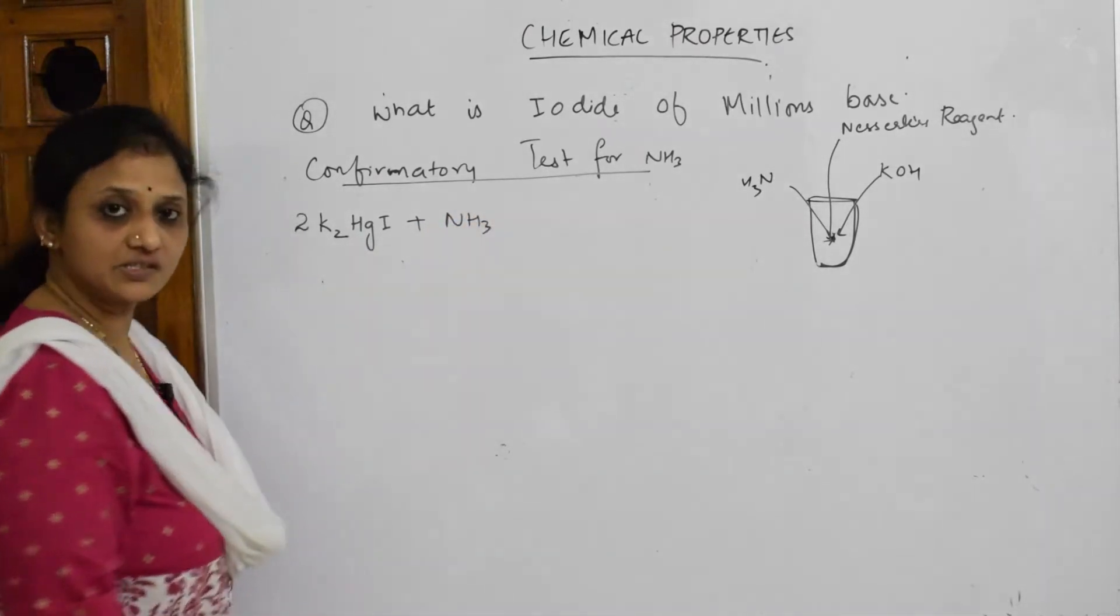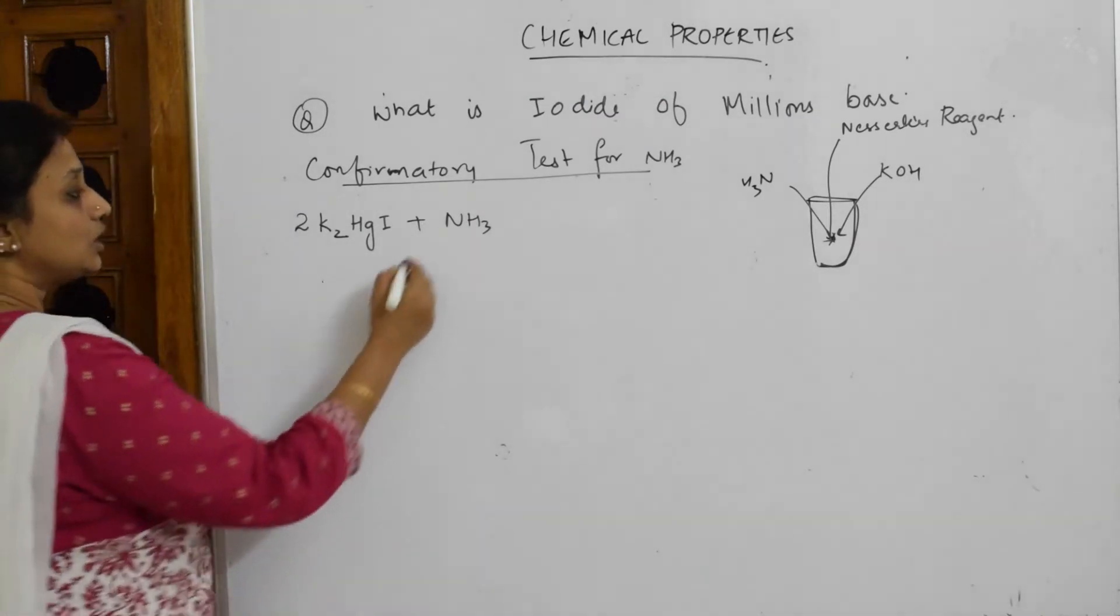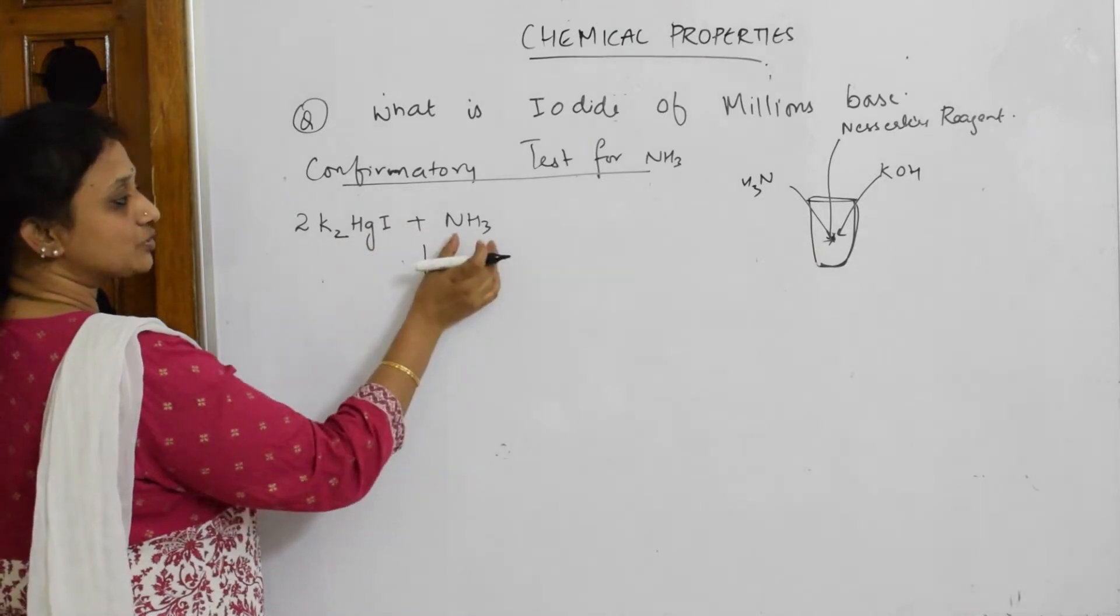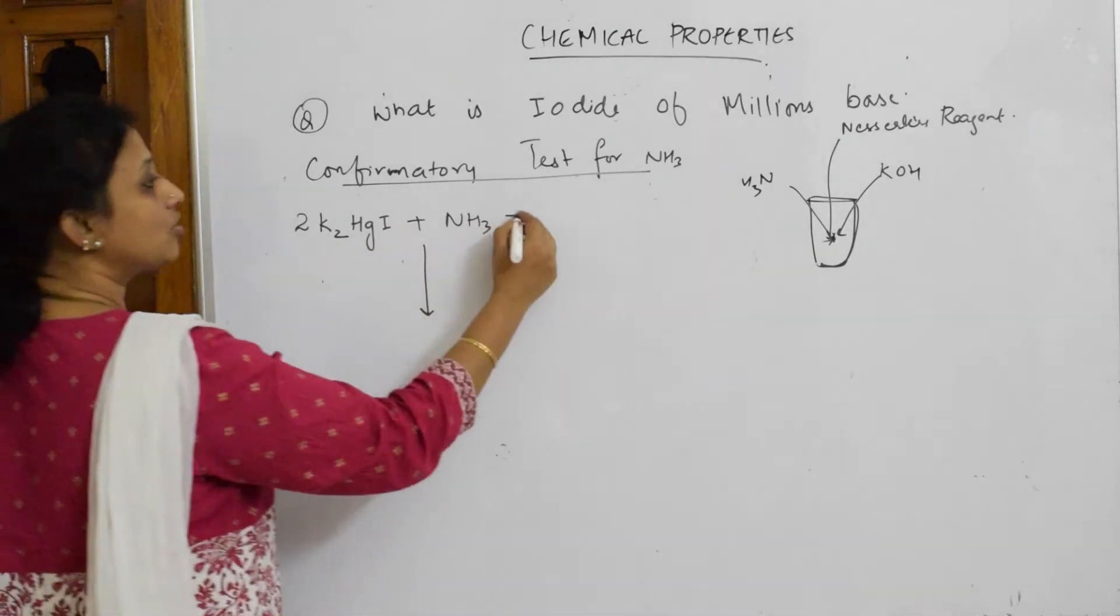What is the Nessler's reagent? K2HgI4, potassium mercury iodide. To this I'm going to add ammonia. Now remember I'm going to take two moles of this. This is where you'll be careful now. What are the products? This is used to detect ammonia. Along with this you also should add KOH.